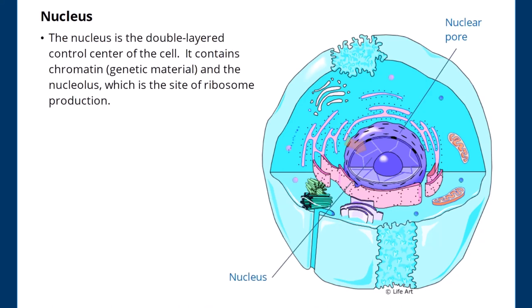Nucleus. The nucleus is the double-layered control center of the cell. It contains chromatin, genetic material, and the nucleolus, which is the site of ribosome production.